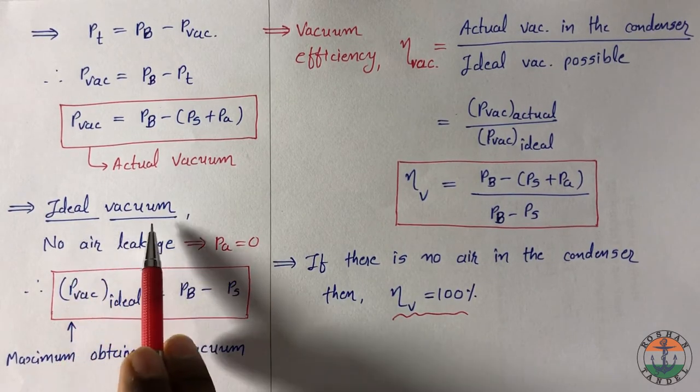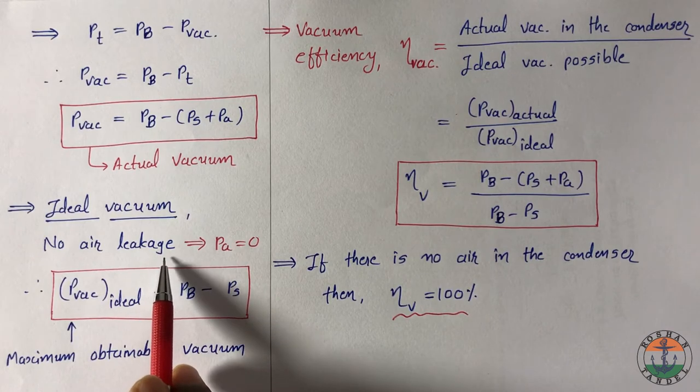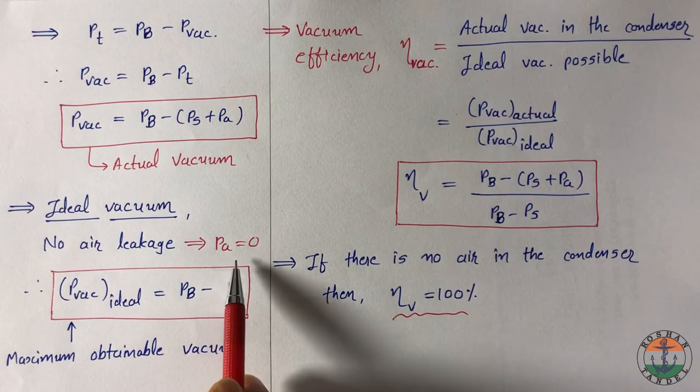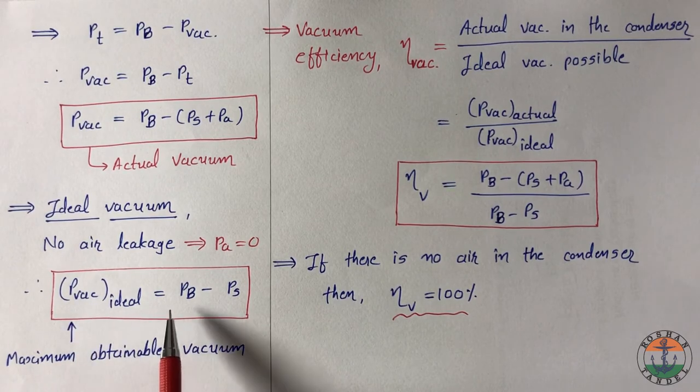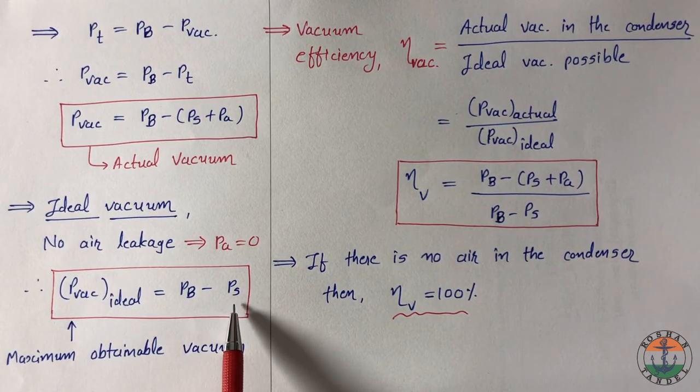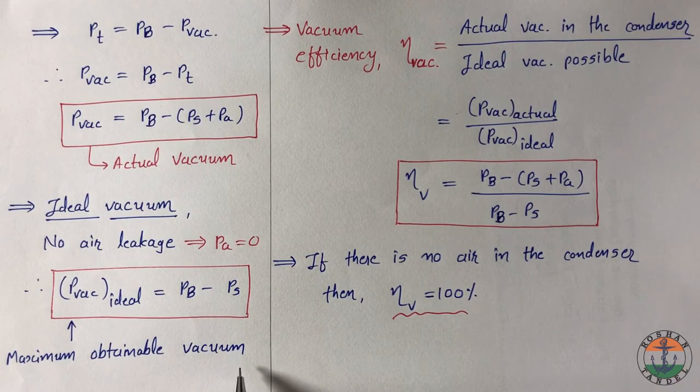If you consider ideal vacuum, which means no air leakage in the condenser, so Pa will be equal to 0. In this case ideal vacuum is taken as Pb minus Ps only. This is the maximum obtainable vacuum in the condenser.